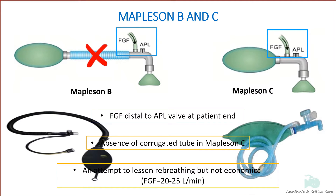Fresh gas flow required is equal to peak inspiratory flow rate, about 20 to 25 liters per minute, to prevent re-breathing. As a result, there is a significant wastage of gas.